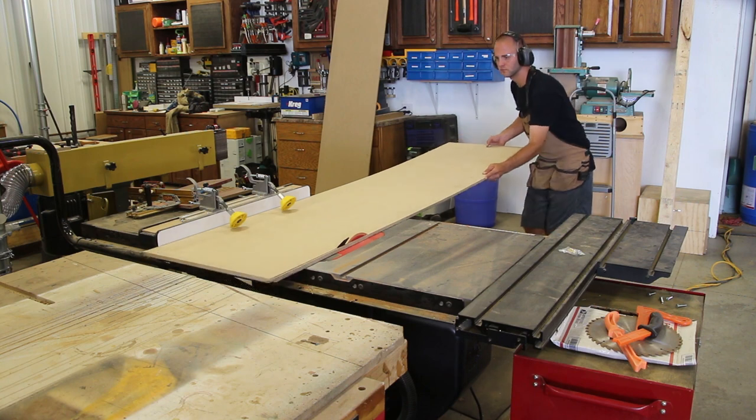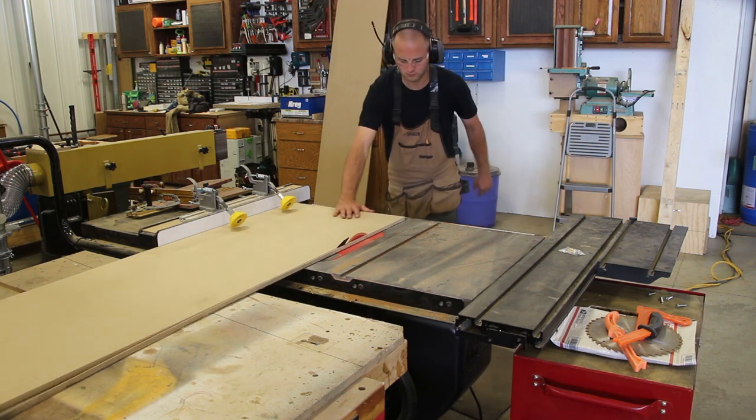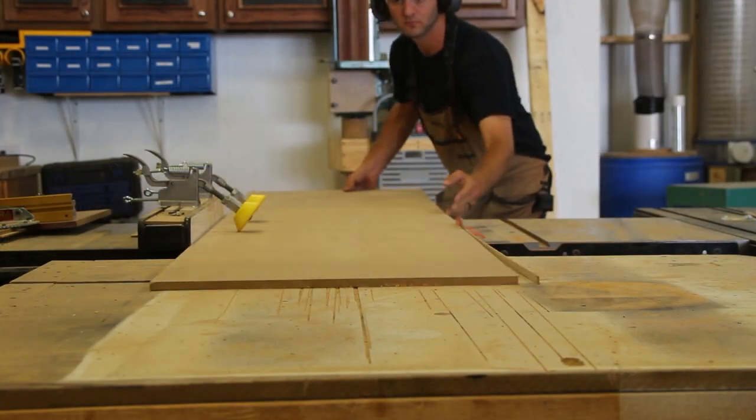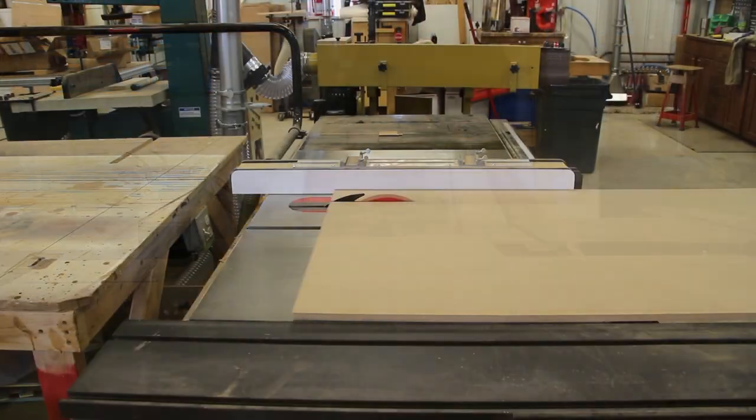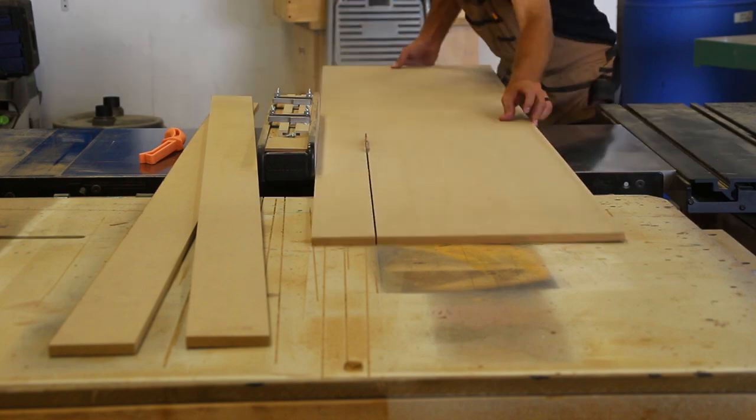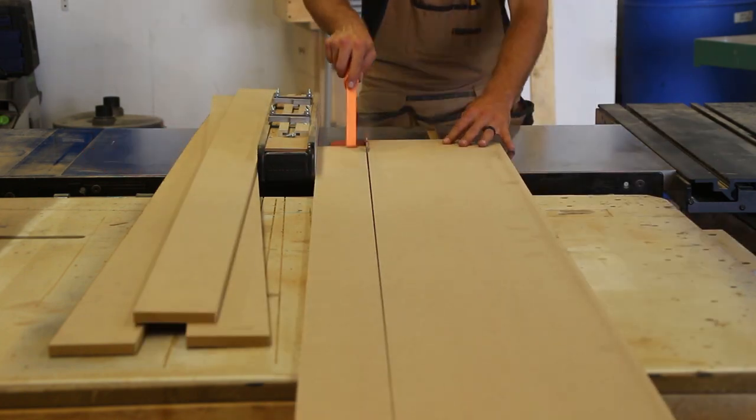Next we can build the support wings for the miter saw itself. I rip half inch MDF at the table saw to the height of my saw surface minus a half inch for the wing top. These will be the vertical supports. They will support the top and also create the cavity for the drawers.